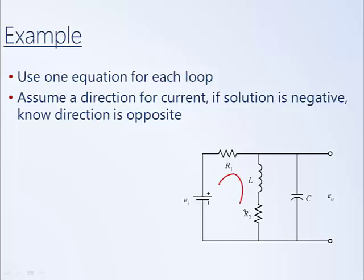So here's our first loop. I will assume that it flows clockwise and I'll call the current I1. And here's our second loop. Again, I will assume that it flows clockwise and I will call that current I2.